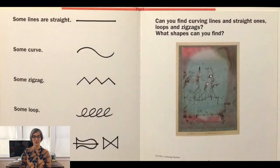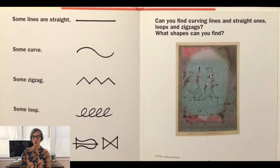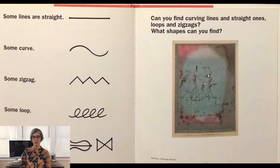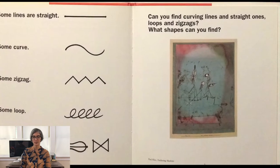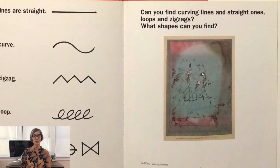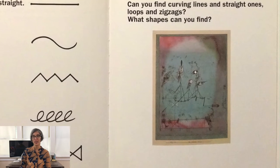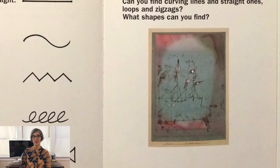Some lines are straight, some curve, some zigzag, some loop, some make shapes. Can you find curving lines and straight ones, loops and zigzags? What shapes can you find? Look closely, and if you need to pause the video, you can.